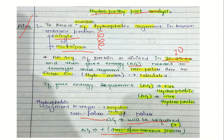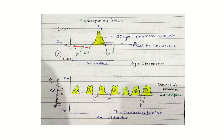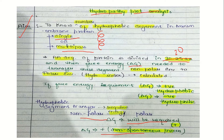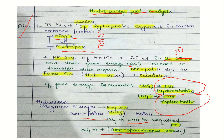In our hydropathy plot, we have a zero baseline. Positive values are plotted above and negative values below. The x-axis shows amino acid residue position and we get different peaks. If delta G is positive, the segment is hydrophobic — non-polar to polar transfer is not favorable. If delta G is negative, the segment is hydrophilic — the transfer to polar is spontaneous.